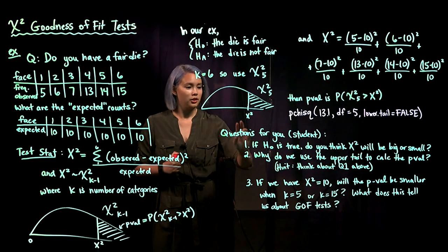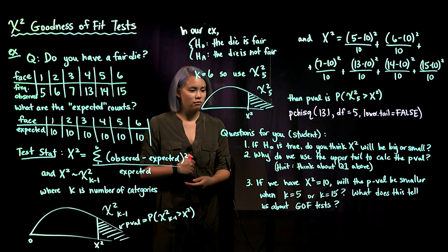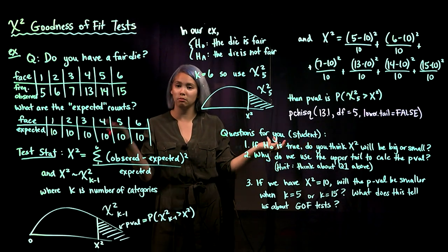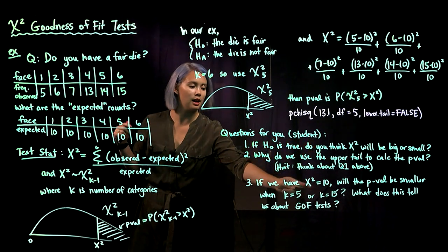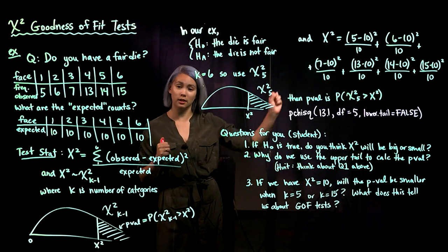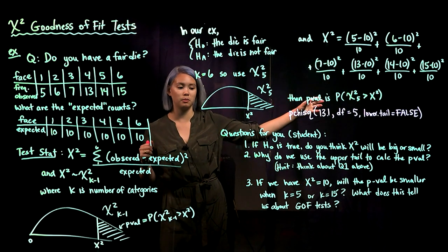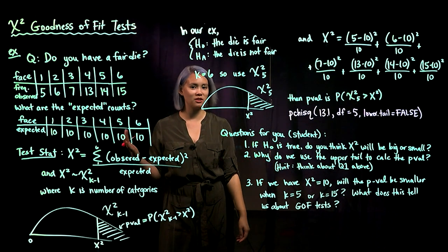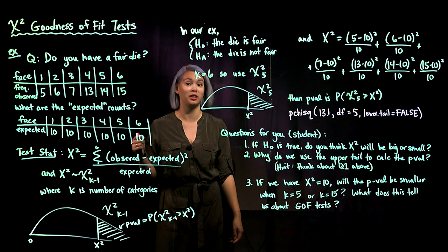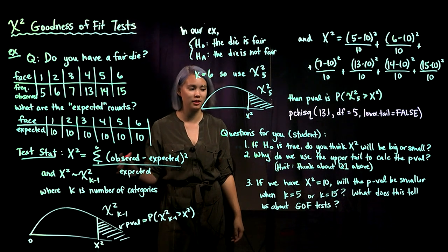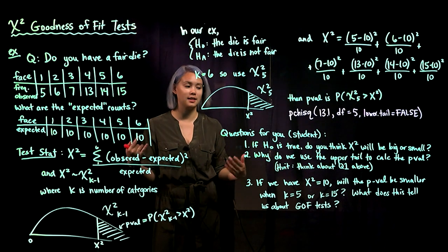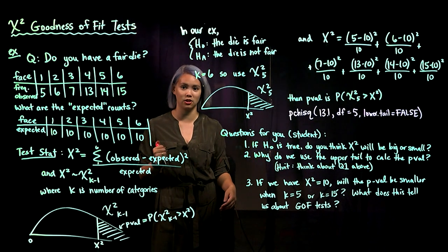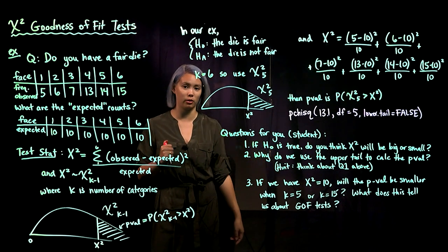For question three, imagine you're doing two different tests and in both you get a test statistic of ten by luck. In one test you have five groups and in the other you have 15 groups. Which test gives you a smaller p-value? Once you figure that out, generalize: what does this tell us about goodness of fit tests in general in relation to the number of categories?